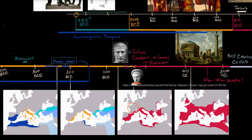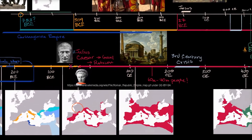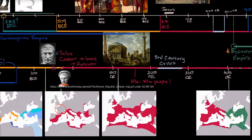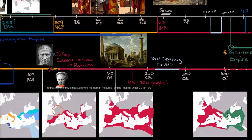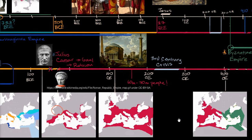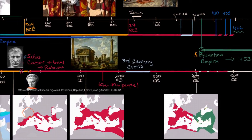And eventually we get a split in the fourth century CE where we have eastern and western halves of the Roman Empire. The western side is centered at Rome, the eastern side centered at what was originally Byzantium, renamed Constantinople, and today Istanbul. And as we get into the fifth century, that's when the western empire especially starts to really go into decline and is eventually sacked in 476, but the eastern empire keeps on going.